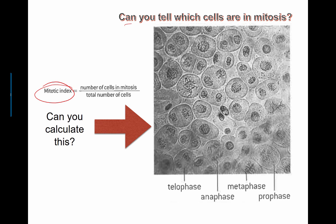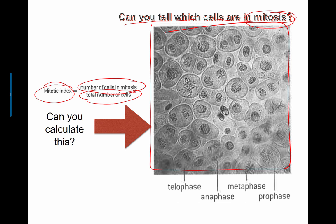And so if you can tell which cells are actually in mitosis, you can do a simple division. You just count up the total number of cells that you see in your sample, and then on top of that, you're going to put the number of cells that are in mitosis.